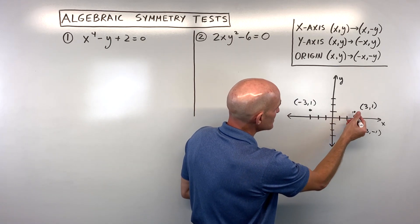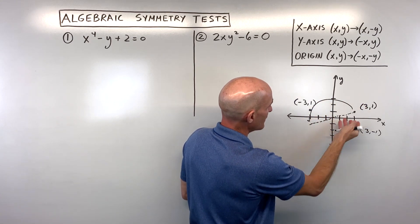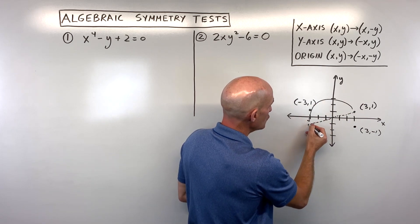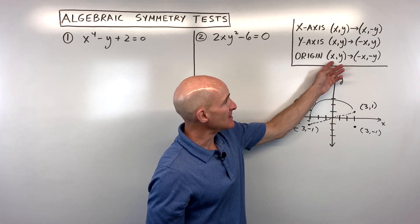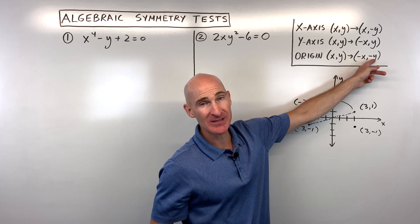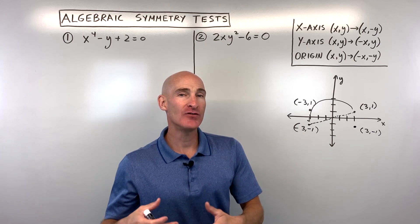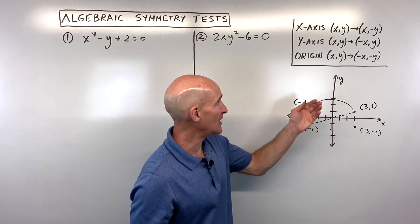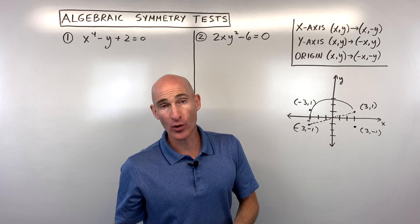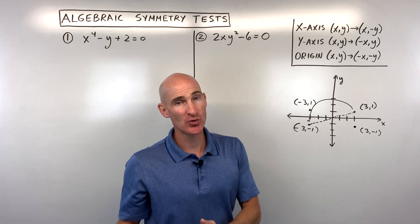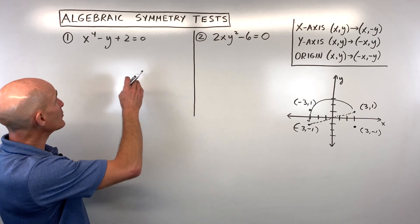If you take point 3, 1 and rotate it 180 degrees about the origin, you end up at negative 3, negative 1. Both x and y change to the opposite sign. So in your equation, you replace x with negative x and y with negative y — if you get the original equation back, it has origin symmetry. Keep in mind it could have x-axis, y-axis, and origin symmetry — all of them, two of them, just one, or maybe none at all.